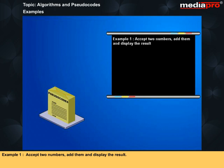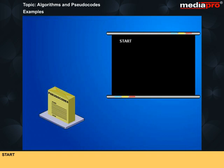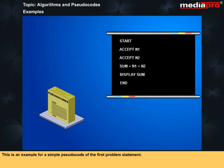Example 1: Accept two numbers, add them and display the result. The steps for the above problem statement are: Start, Accept N1, Accept N2, Sum is equal to N1 plus N2, Display sum. This is an example for a simple pseudocode of the first problem statement.